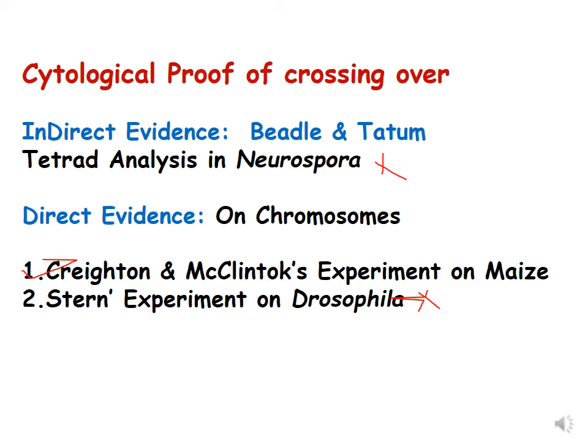We know that crossing over occurs at the four-stranded stage of chromosomes, but earlier this was not known. Experiments were done to prove it, and there are two kinds of evidence. First is indirect evidence, given by Beadle and Tatum using Neurospora — they did tetrad analysis to prove crossing over occurs at the four-stranded stage. However, this is not in your course so we are not covering it here.